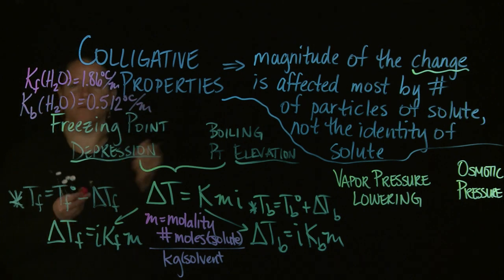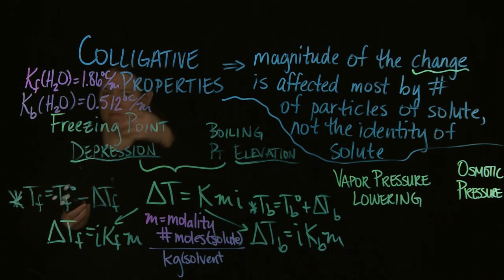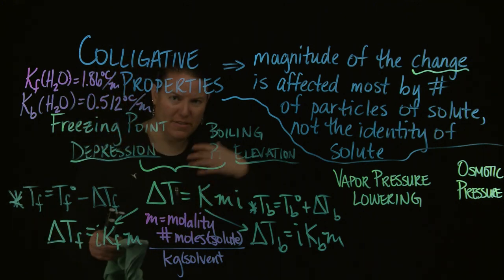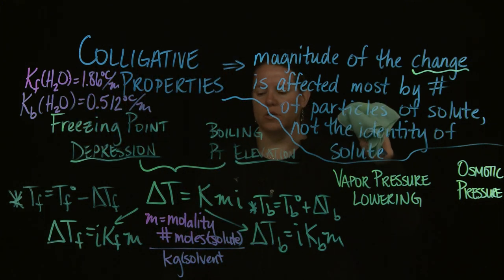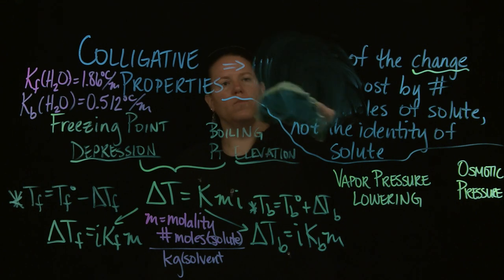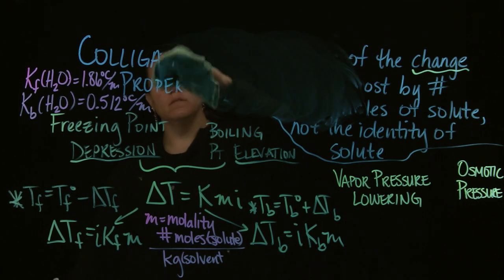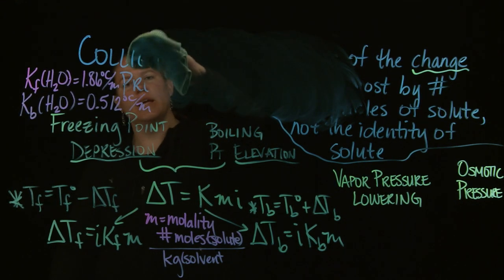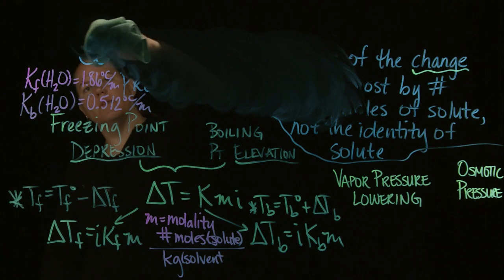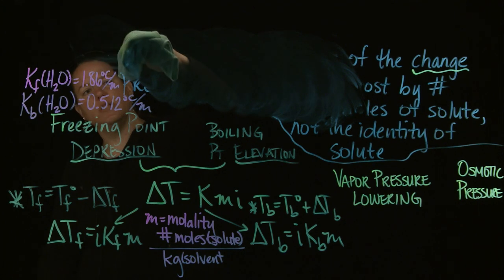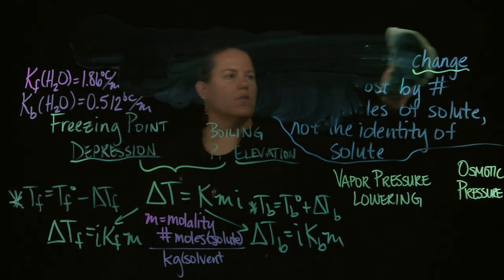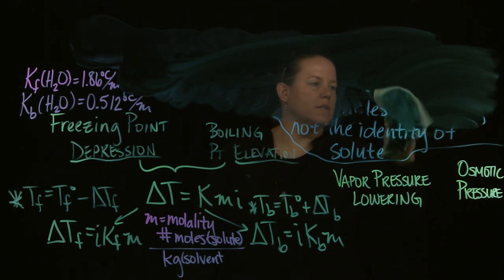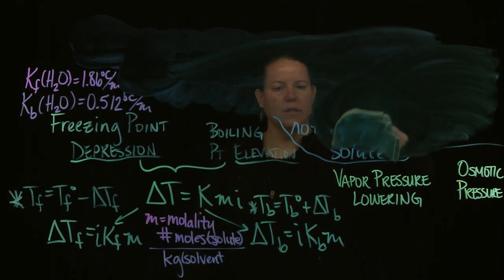KB for water is 0.512 °C per molal. Those should be given on an exam — you don't need to memorize the K values. They change for different substances, and you actually have to look them up on some kind of reference site.